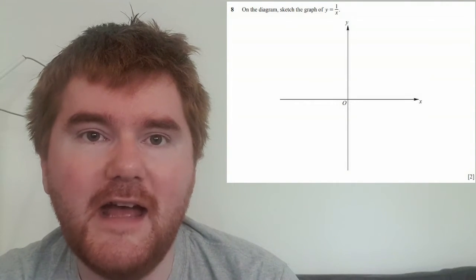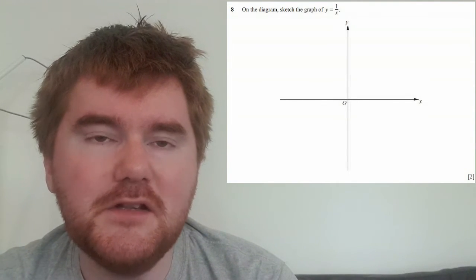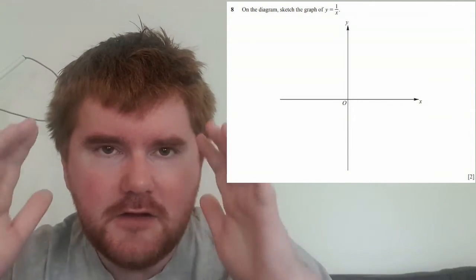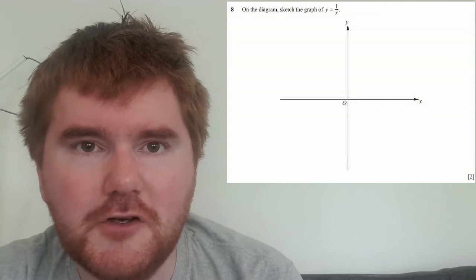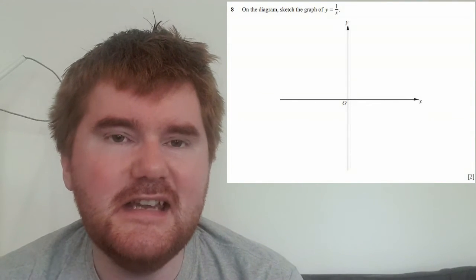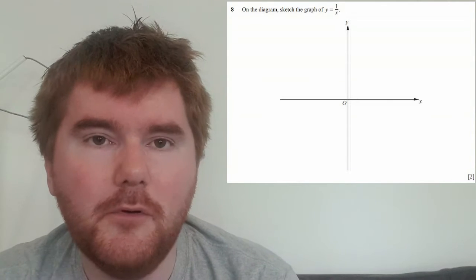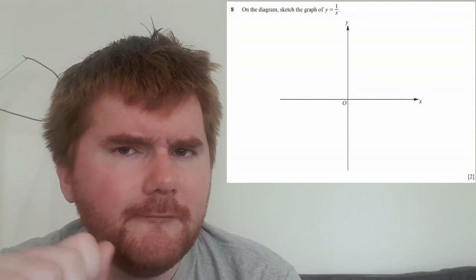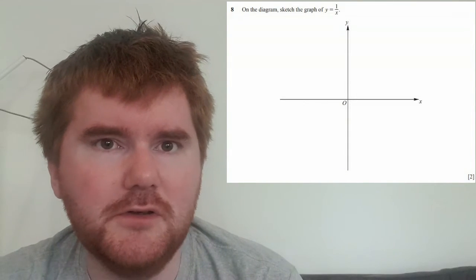My very last question here is a graph sketching question: y equals one over x. One thing we can do here is try and actually work out what this function even looks like. Say you've completely forgotten what a reciprocal function looks like - well, let's try some numbers. When x equals one, for example, then y equals one over one, which is one. So you can roughly plot that coordinate on the graph.